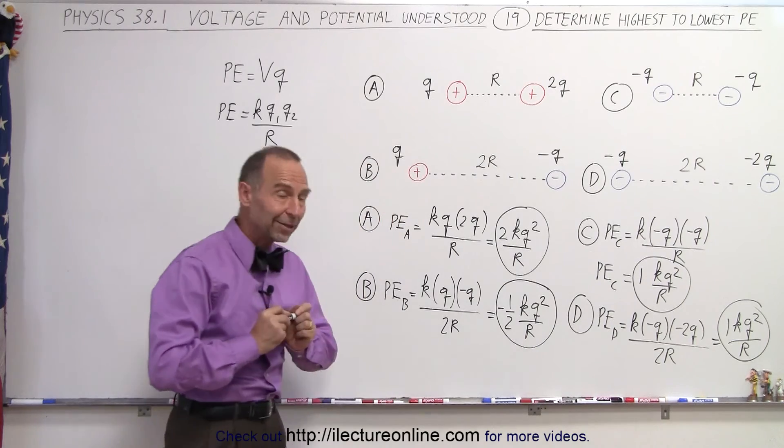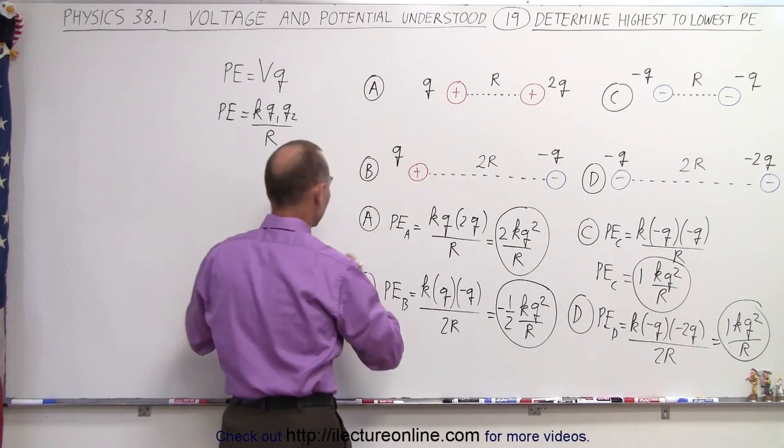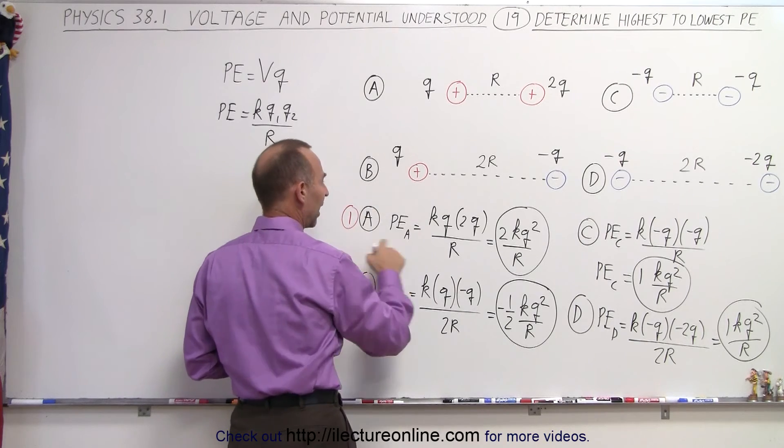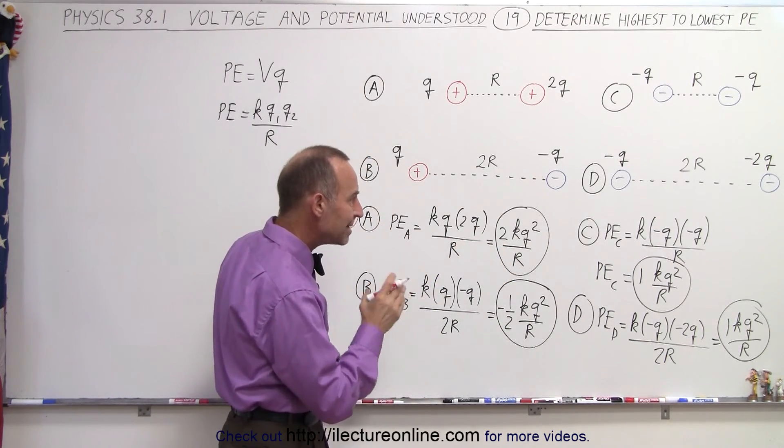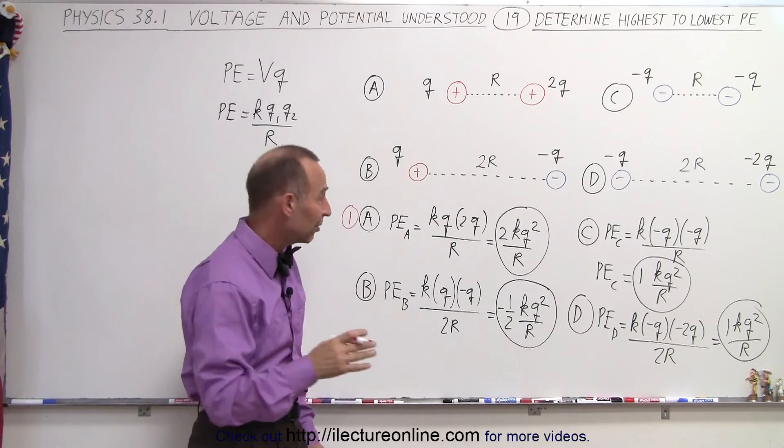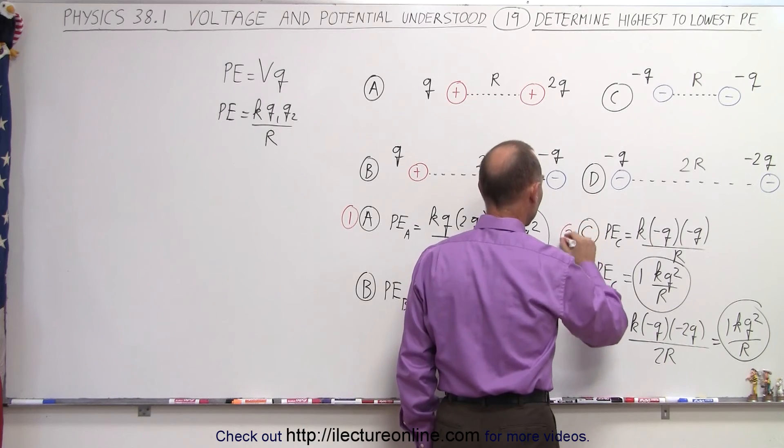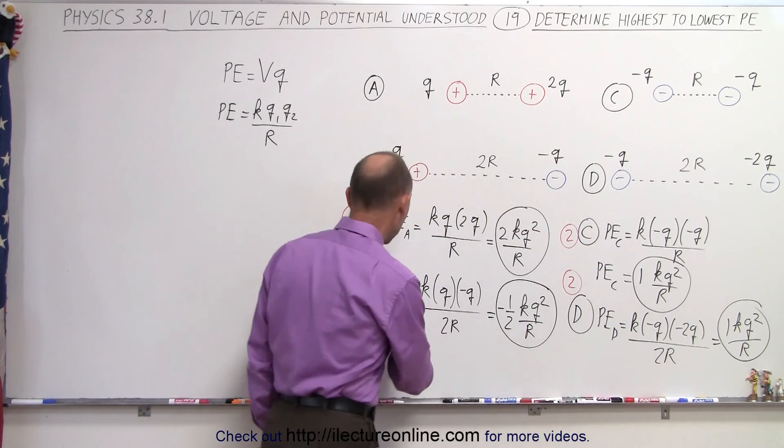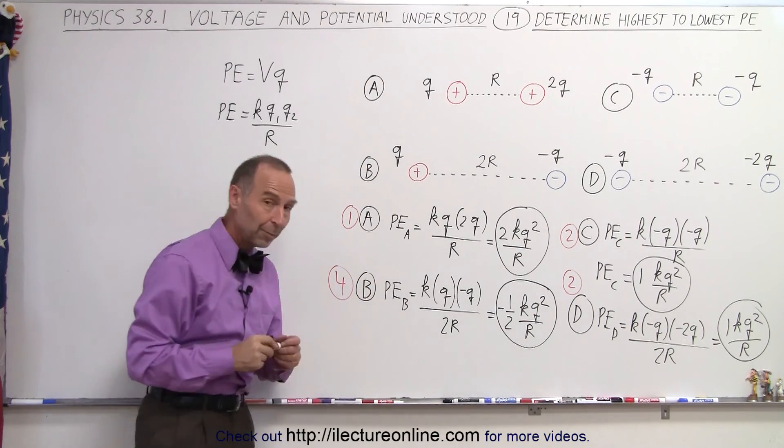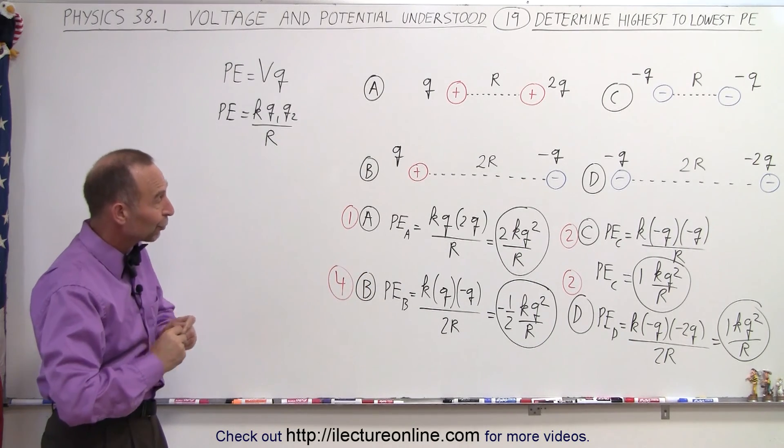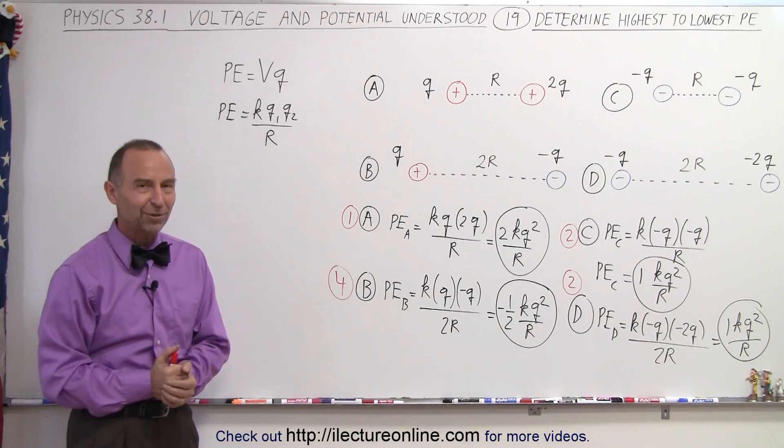Okay, now we're ready to rank them. It looks like A is number 1. So we give this a number 1, because that's the highest ranking, the most energy required. Then C and D require the same amount of energy, half as much as A, but the same amount, so both of them get second place. And this one here is the negative energy, so we'll give that fourth place. And that would be the proper ranking for those four situations in terms of their potential energy. And that's how it's done.